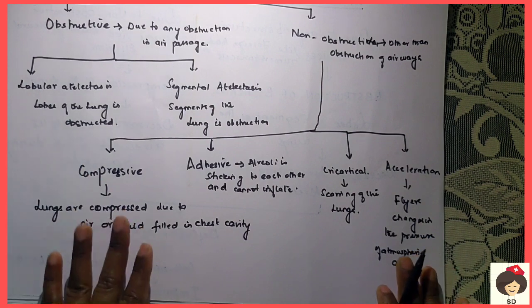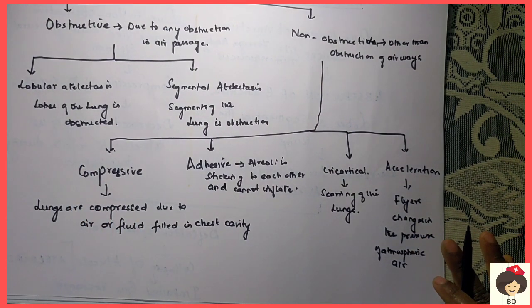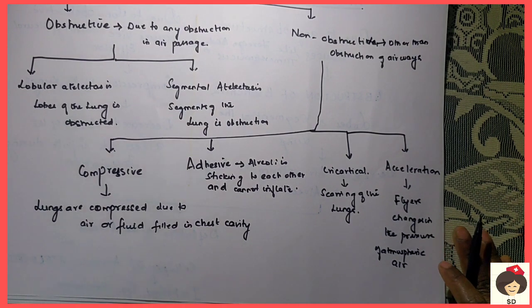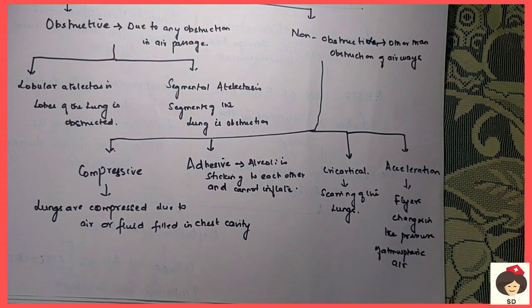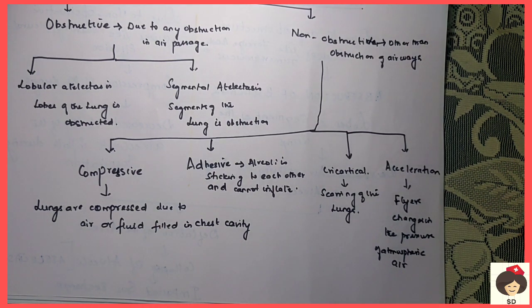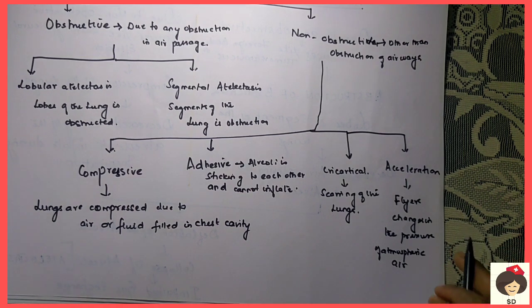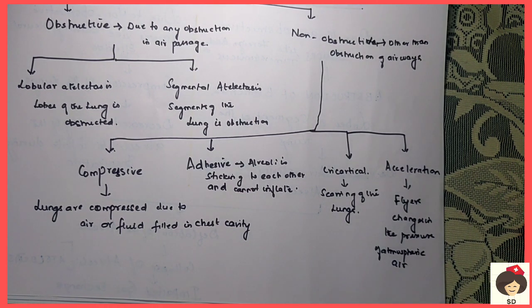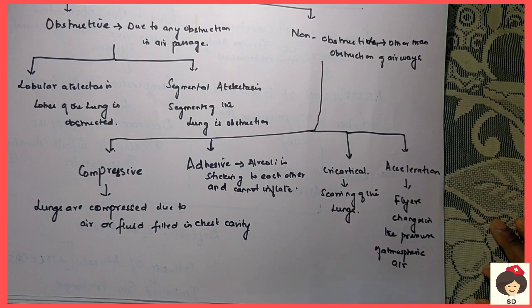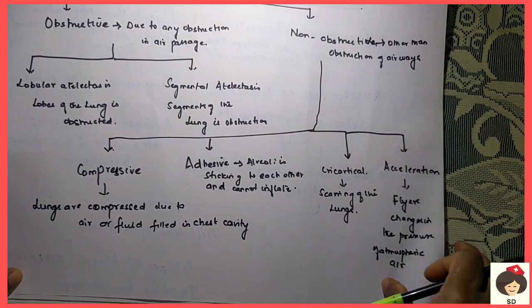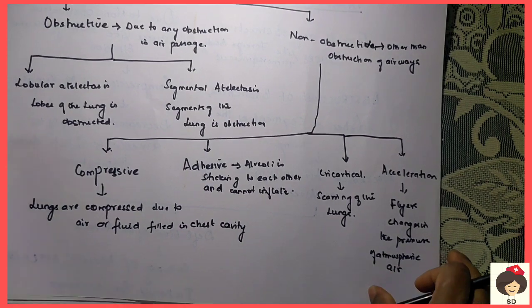To summarize: compressive means something is filled in the pleural cavity compressing the alveoli. Adhesive means something is sticking inside the alveoli so they cannot inflate properly. Cicatricial means there is scarring of the lungs where the lungs become tightened, so proper inhalation and exhalation is not taking place and the lungs collapse. Acceleration is mainly in persons frequently traveling in flights due to changes in atmospheric pressure between ground level and high altitude.